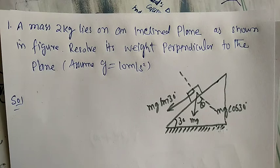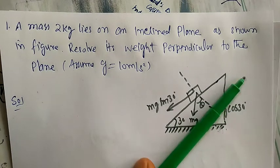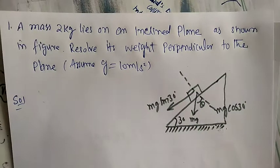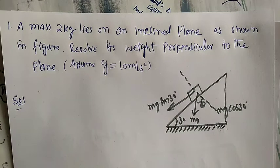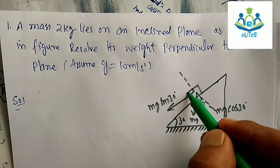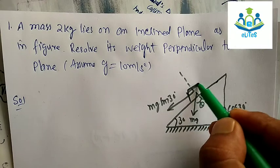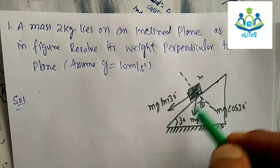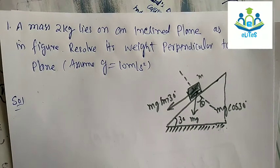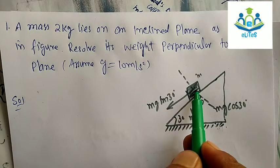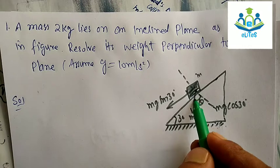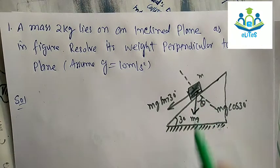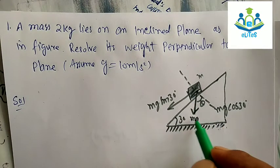This is an inclined plane, inclined at angle theta from the horizontal position. Now suppose we have a body whose mass is m lying on this plane. Its weight acts directly downwards — this is weight mg.